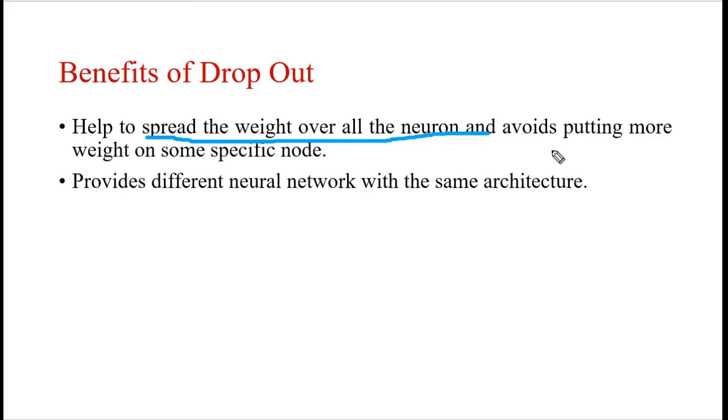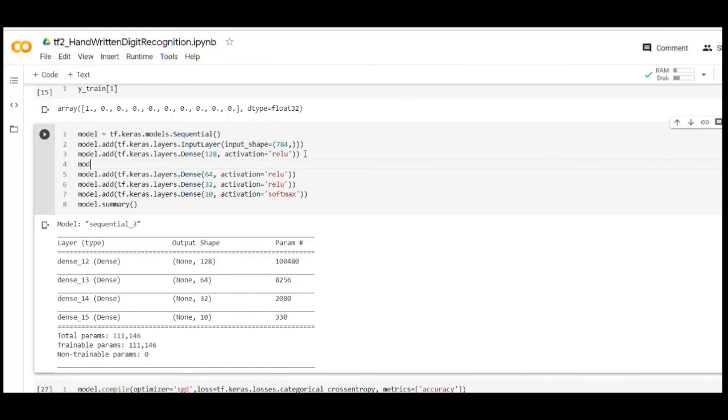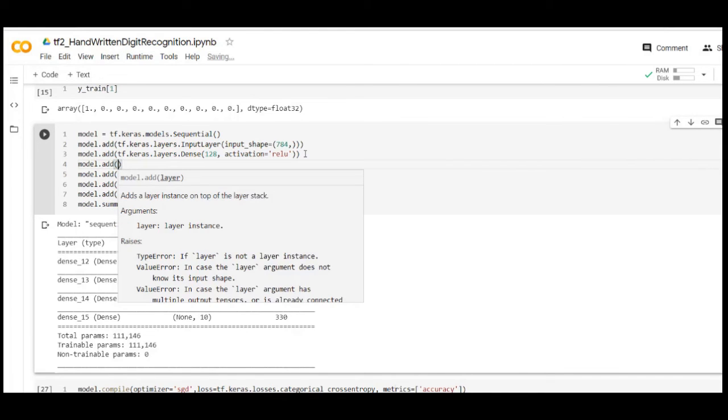We will check that through code. This was the code for our previous model. We created an input layer, then added three hidden layers, and at the last we have an output layer with 10 neurons having softmax activation function. Each neuron corresponds to one digit from 0 to 9. In TensorFlow, we can add dropout as a layer. For that we use model.add, then tf.keras.layers.dropout.